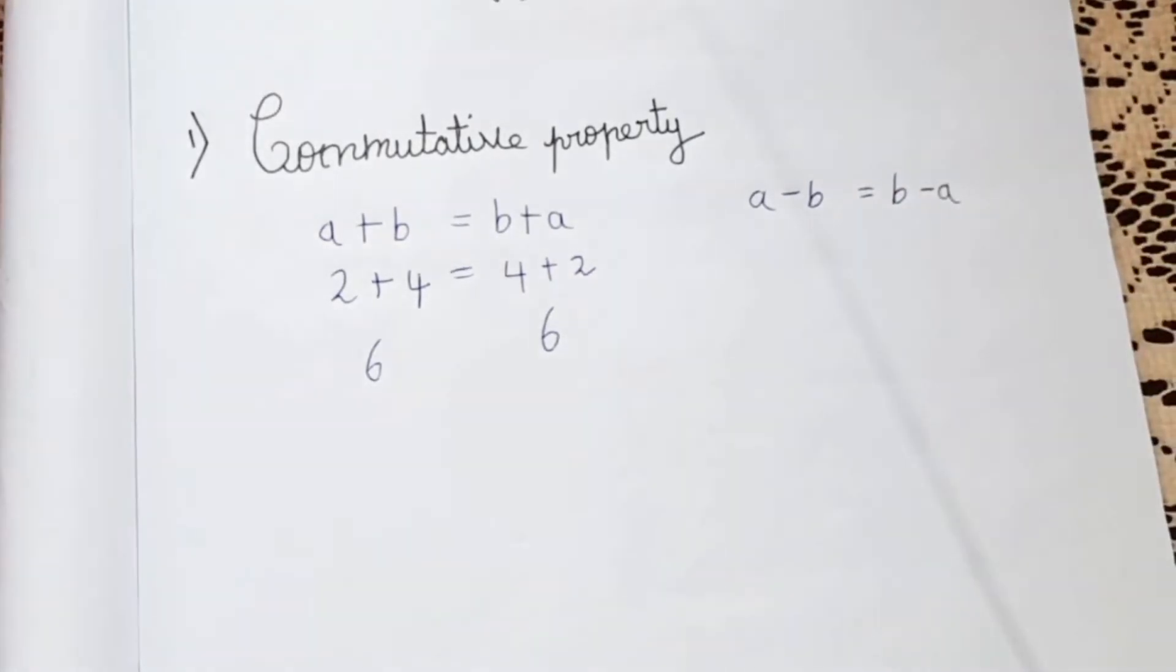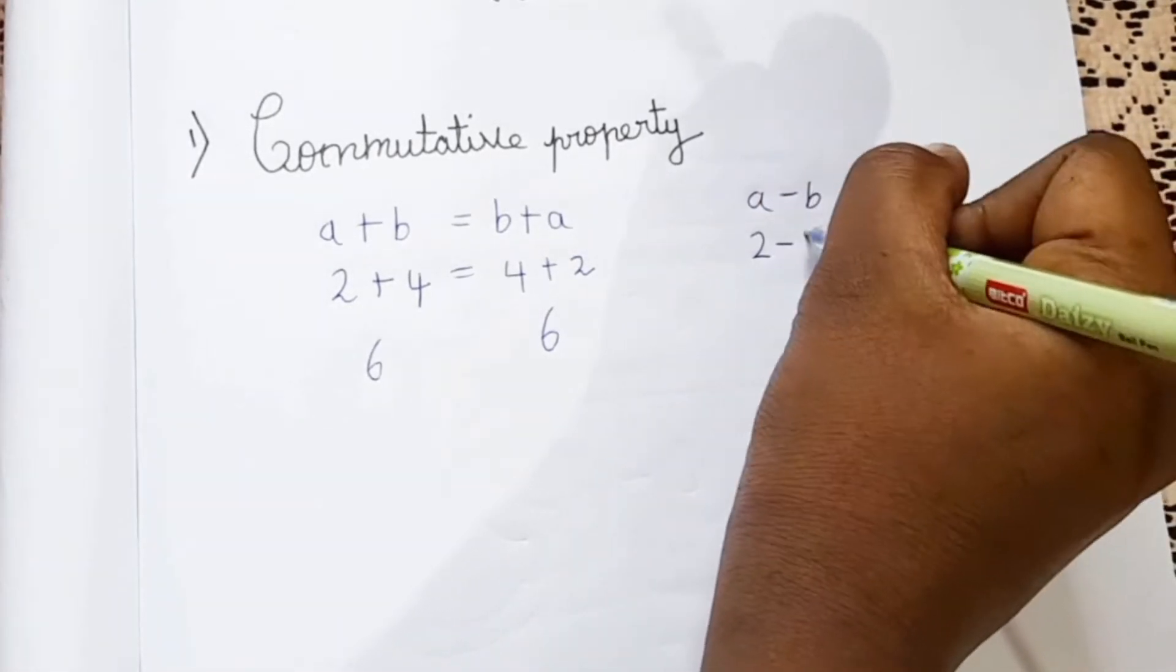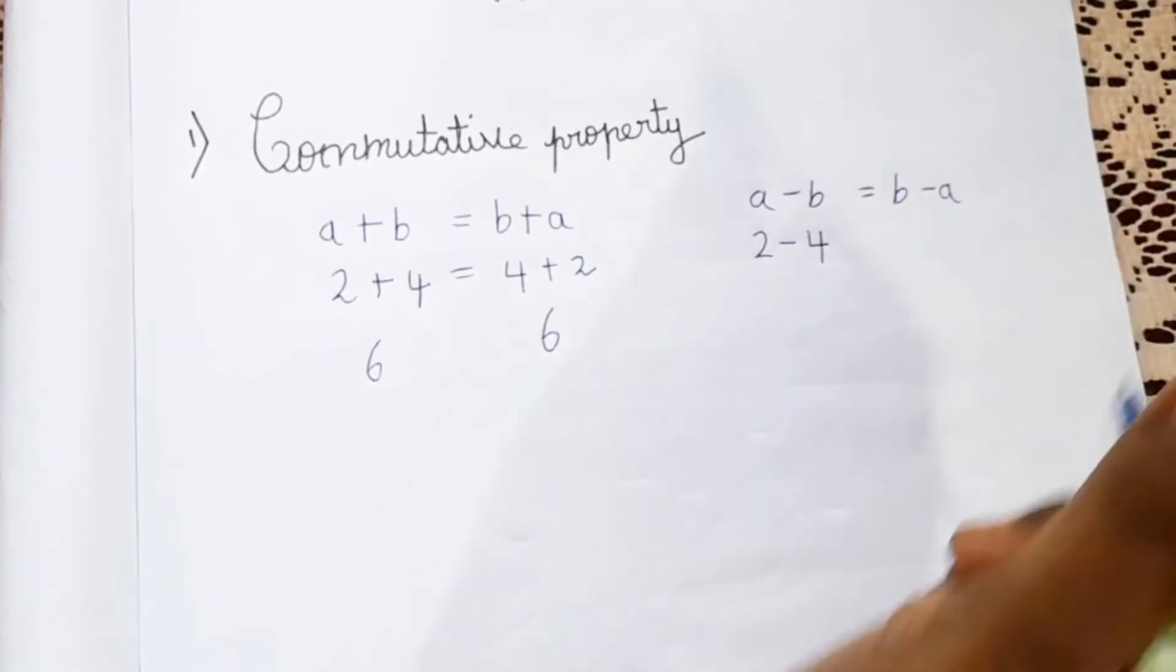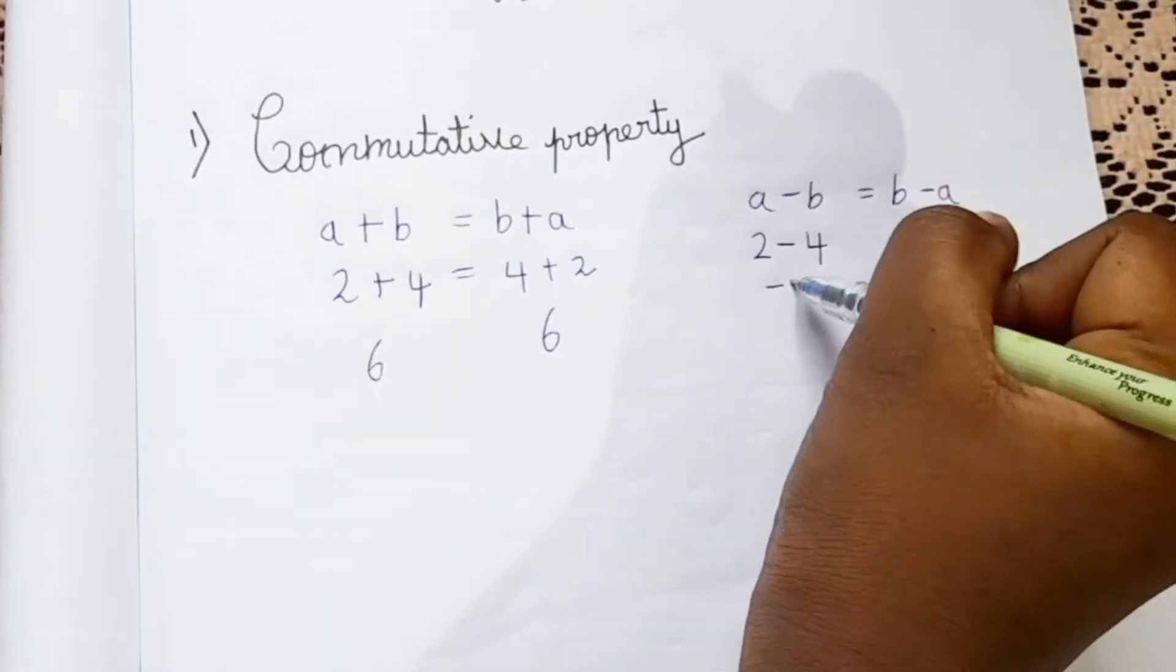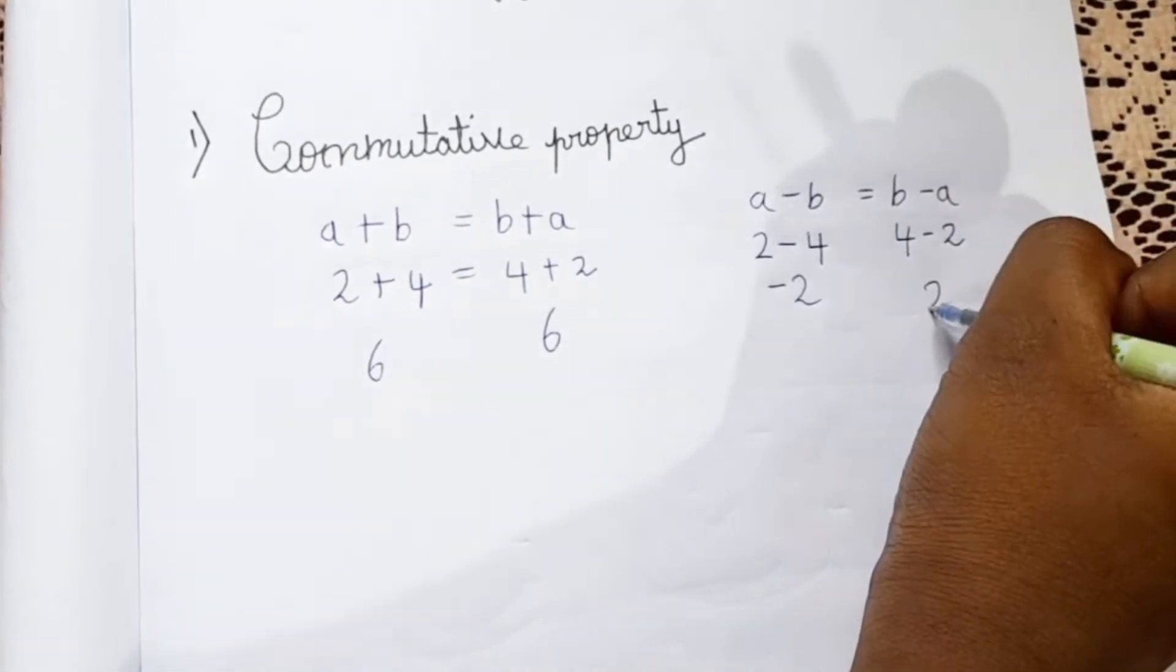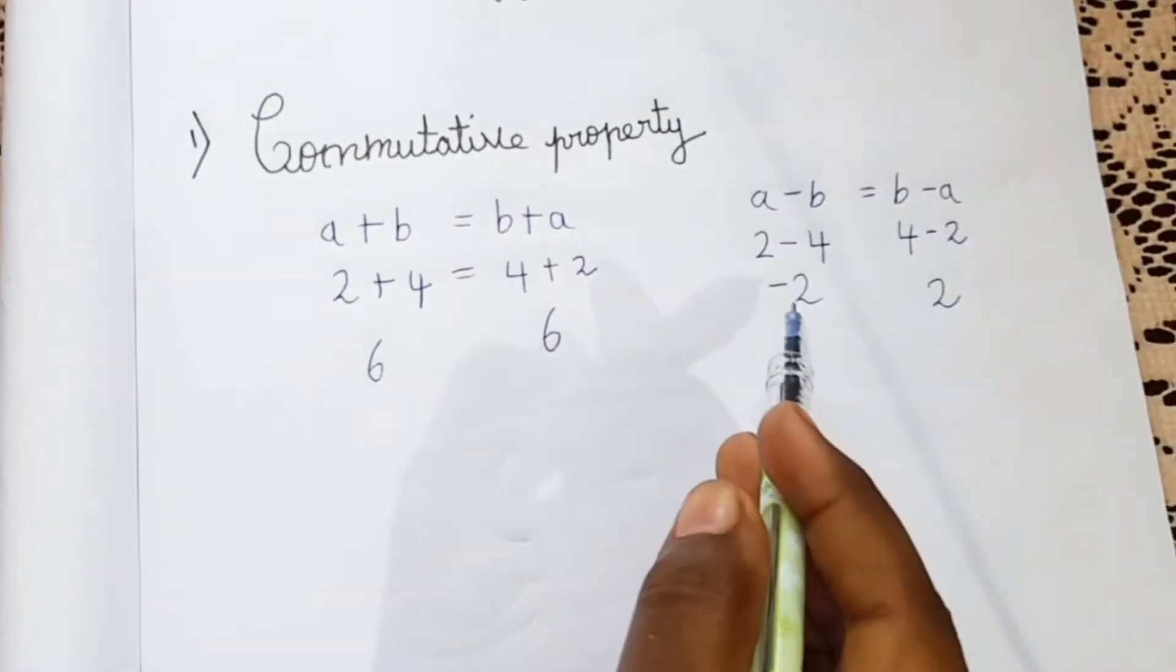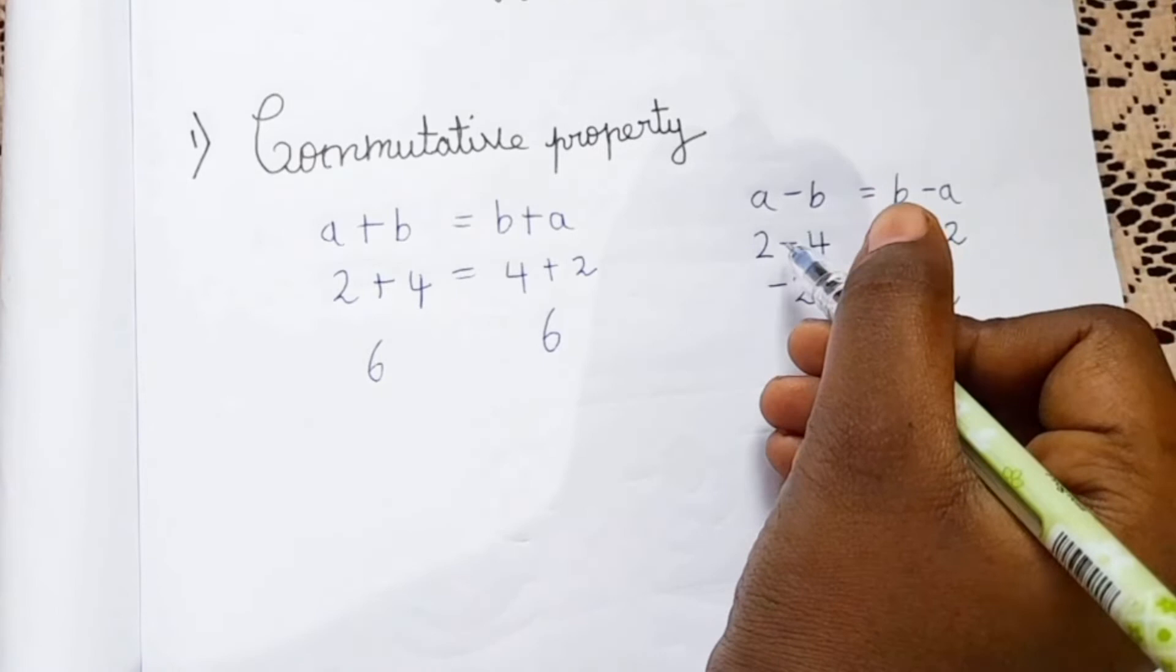So now I have written equal to, let me show you. So here also I am taking 2 minus 4. So 2 minus 4 is minus 2 and 4 minus 2 is 2.